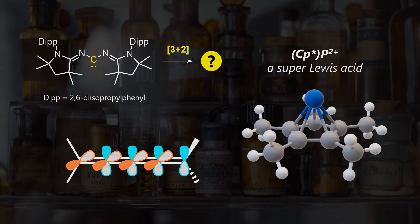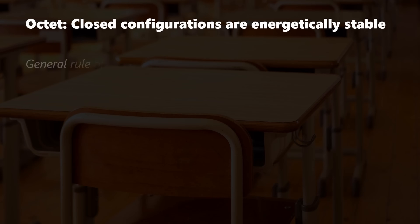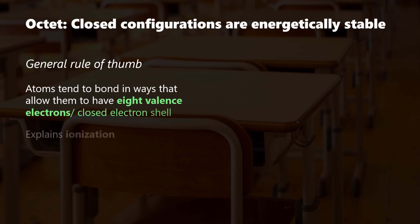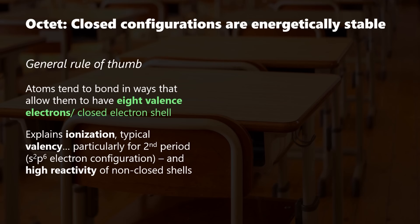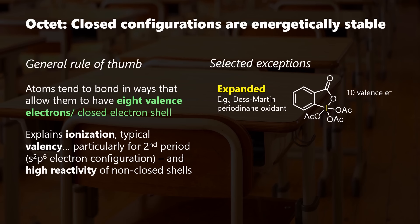The octet rule is a broad guideline that states atoms strive to bond towards closed shell configurations. This is most applicable to non-metal ions and elements like carbon or nitrogen. You will all know some exceptions to the rule as well — elements below the third period can be hypervalent. On the other hand, carbon violates the octet rule when forming carbenes, making them highly reactive. This is why compounds like N-heterocyclic carbenes have found many applications in synthetic chemistry.